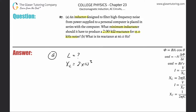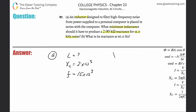We need that in ohms, so multiply by 10 to the third. The frequency is 15 kilohertz, so that's 15 times 10 to the third hertz. Now, how are these things related? They're related via the formula that the inductive reactance equals 2 pi times the frequency of oscillation multiplied by the inductance.